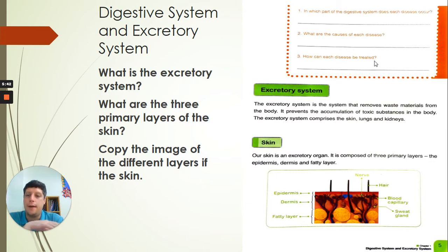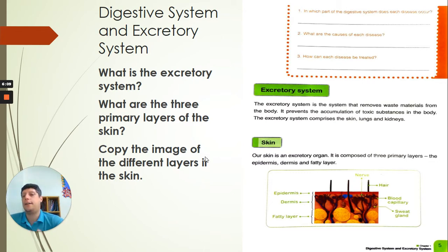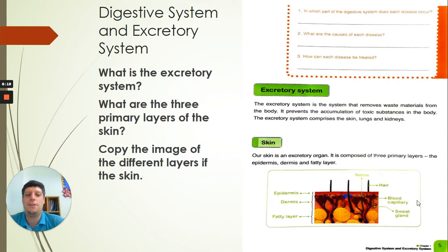Before we move on to the next page, I want to remind you of the questions you need to answer in your copybooks for homework on this page. The first question is: what is the excretory system? The second question is: what are the three primary layers of the skin? We've just talked about them. And the third part is to copy the image of the different layers of the skin. Very simple homework for that page.